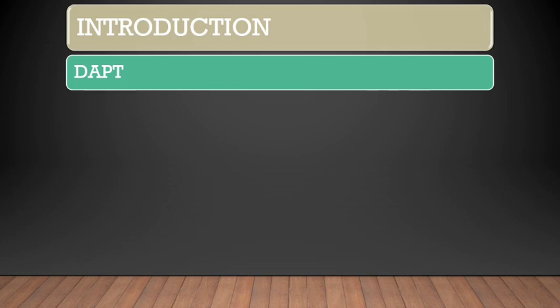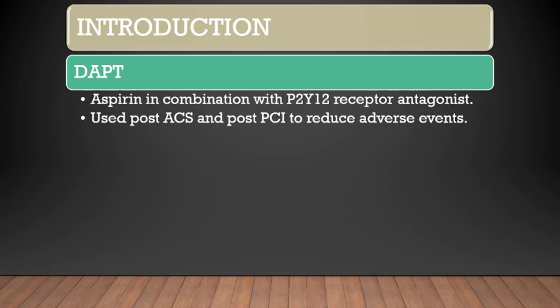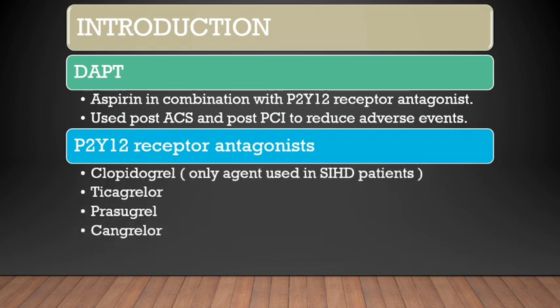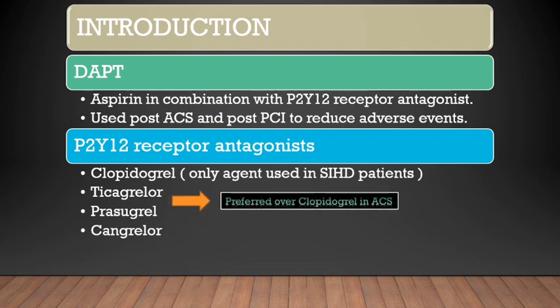We begin with the introduction of dual antiplatelet therapy. Aspirin in combination with a P2Y12 receptor antagonist is referred to as dual antiplatelet therapy, and it is used in patients who have acute coronary syndrome and patients who have undergone PCI to reduce arterial thrombotic adverse events. The P2Y12 receptor antagonists include clopidogrel, which is the only agent used in stable ischemic heart disease patients, ticagrelor, prasugrel, and the intravenous agent cangrelor. Ticagrelor and prasugrel are the preferred agents over clopidogrel in acute coronary syndromes.